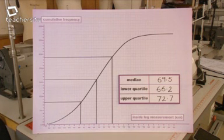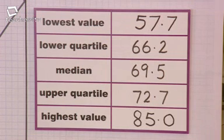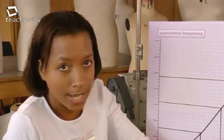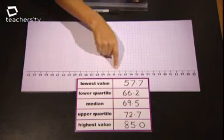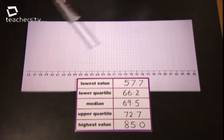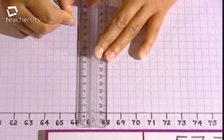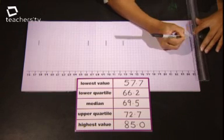From Sue's original data, I know that the lowest measurement is 57.7 centimeters, and the highest measurement is 85 centimeters. These five numbers can then be used to summarize all the data in a simple diagram called a box plot. First, draw a horizontal scale. Then, above the scale, mark out the position of your five numbers with a short vertical line. It doesn't matter how long it is.